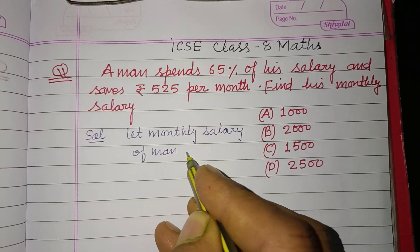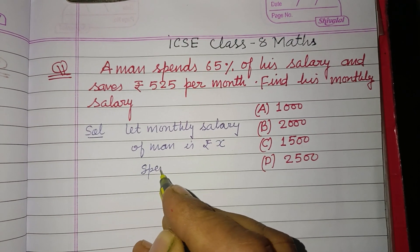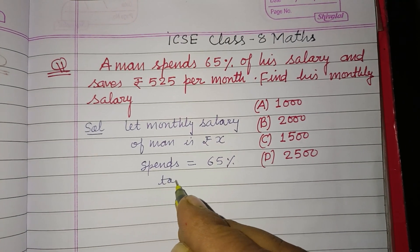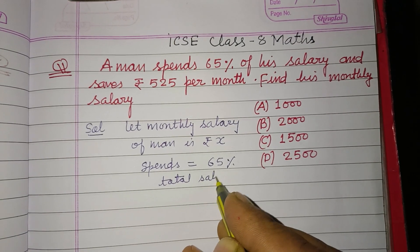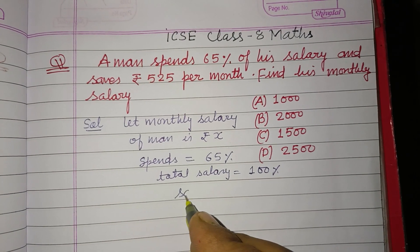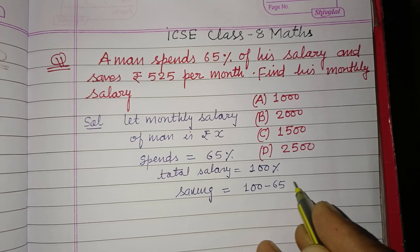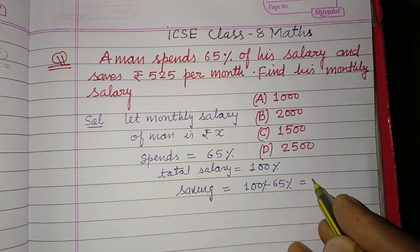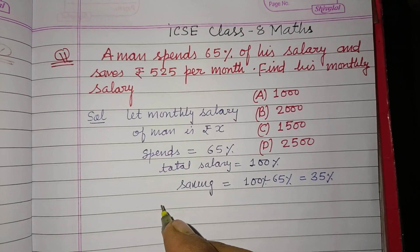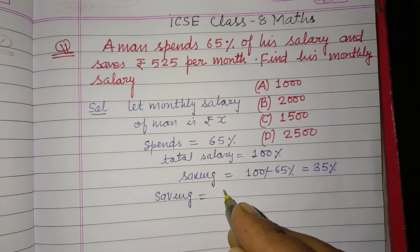The man spends 65% and his total salary is 100%. Therefore, the saving of the man is 100% minus 65%, which gives us 35%. So his saving is 35% of X.